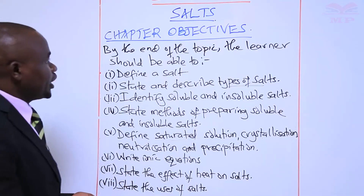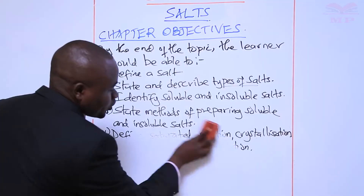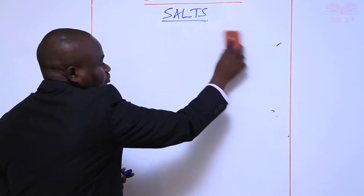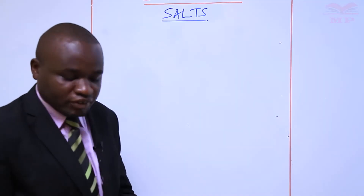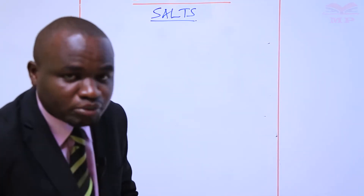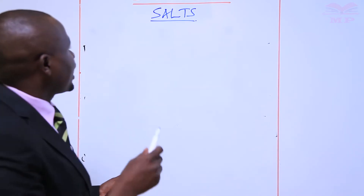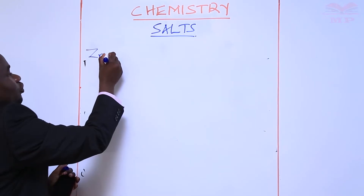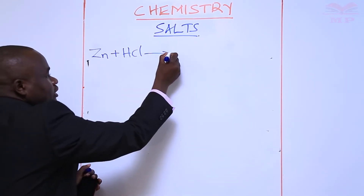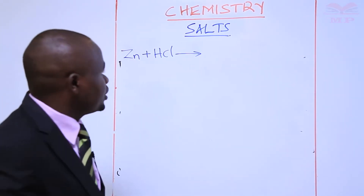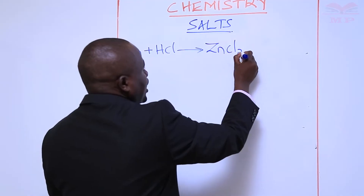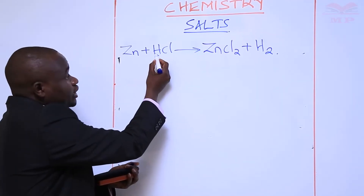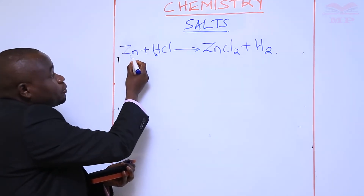Having said that, let us start by knowing the meaning of the word salt. A salt can be defined as a compound that is formed when hydrogen ions from an acid are wholly or partially replaced by a positive ion. For example, if you react zinc metal with hydrochloric acid, zinc will react and the products will be zinc chloride and hydrogen gas.